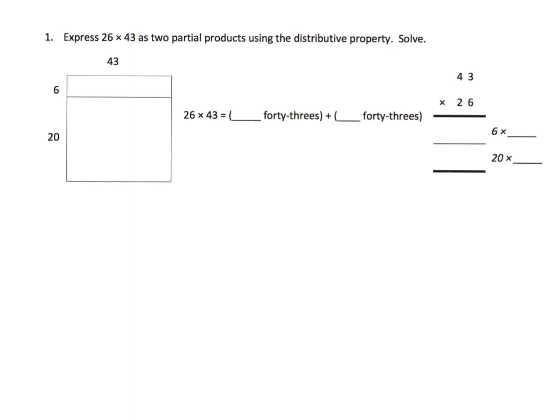So we're going to start from that two partial products method and moving our way towards that standard algorithm. Remember teachers, if your students are really struggling with the two partial products method, go ahead and let your students split that up and make it a four partial products method, and that's perfectly fine at this point. So the idea is first we're going to find the area of this rectangle which is 6 times 43, and then we're going to find the area of this rectangle which is 20 times 43.